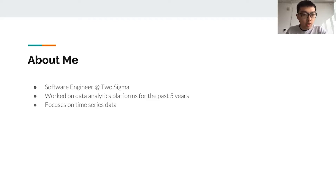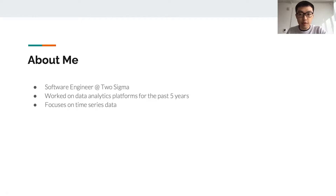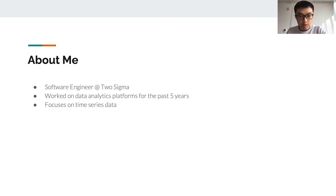My name is Li Jing. I am a software engineer at Two Sigma. For the past five years, I've been working a lot on the data analytics platform for the company, especially to process financial data. My focus is on time series because, of course, a lot of the financial data are time series, and that's what this talk is about.